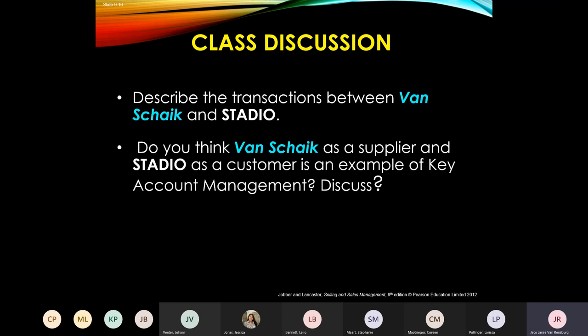Vanskaik has been a supplier for many years — previously to Prestige and now to Stadio — providing textbooks for the library and students. They make up packages for each student and students can collect from Vanskaik directly. The homework question is: Is Vanskaik a key account, or is Stadio a key account for Vanskaik? Also for tomorrow, be prepared to explain the difference between a diamond-shape and a bowtie-shape relationship between buyers and sellers.